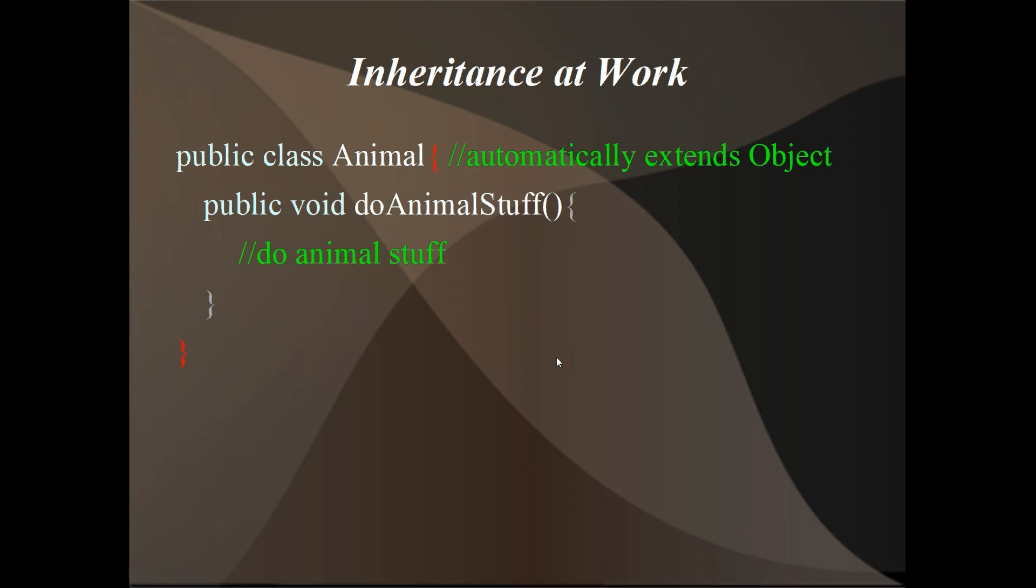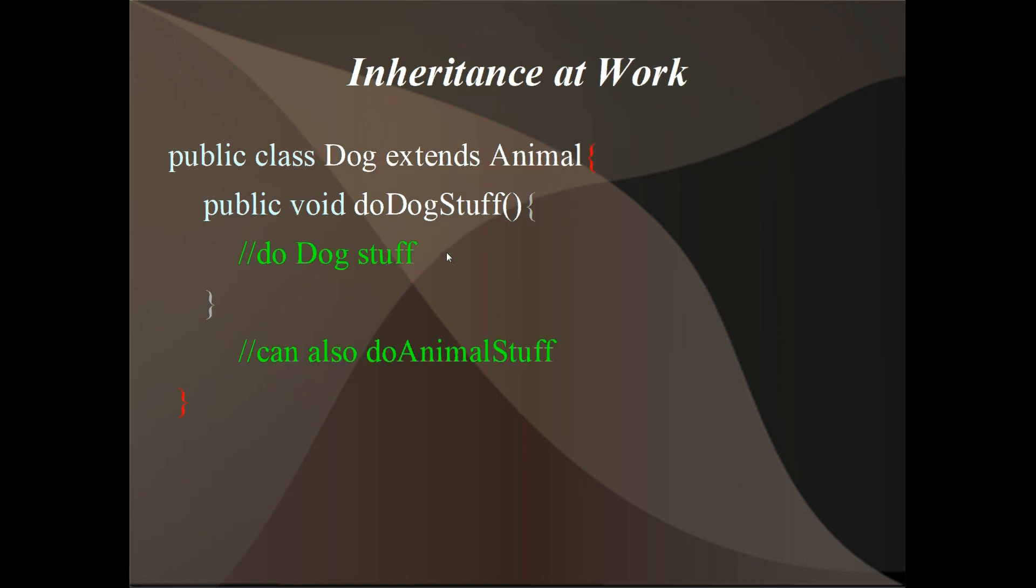So inheritance at work. Let's say we have the public class animal. It automatically extends object. So we get all the functionality of an object. We have public void do animal stuff. Pretty simple. Now we have a dog class that extends animal. Extends is the keyword you use to extend a super class. So it extends animal. We have a method, public void do dog stuff. So now we can do dog stuff. But we can also call on the do animal stuff method from the animal class. Obviously a dog is an animal, so we do animal stuff. We also want it to be able to do specific dog tasks, like fetching a bone.